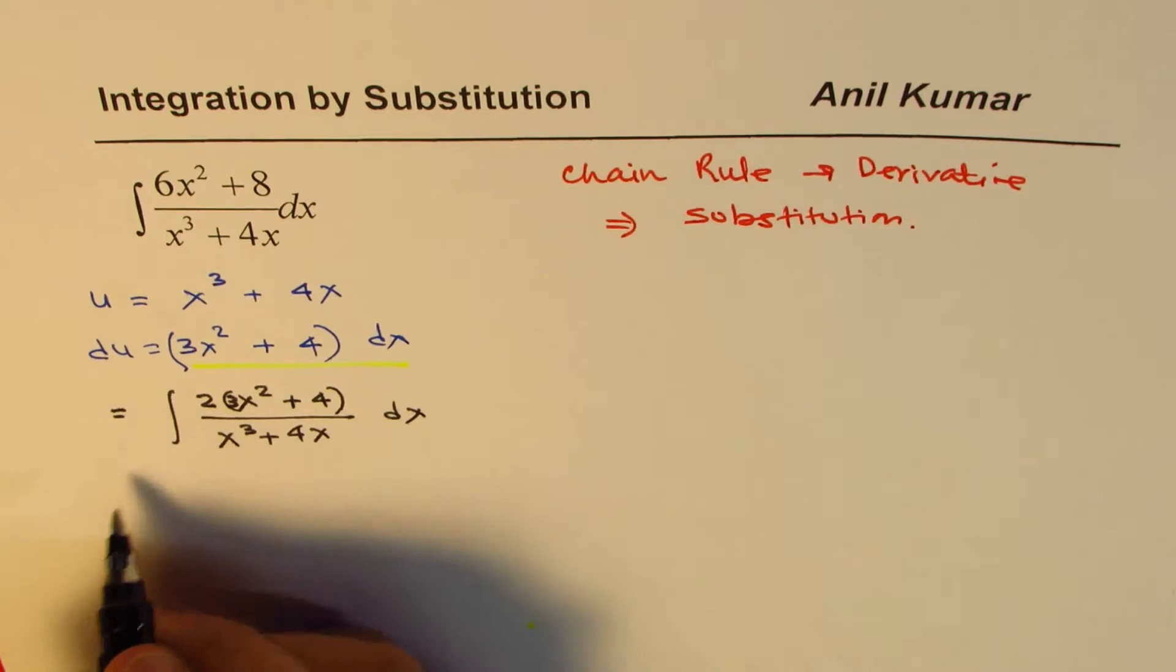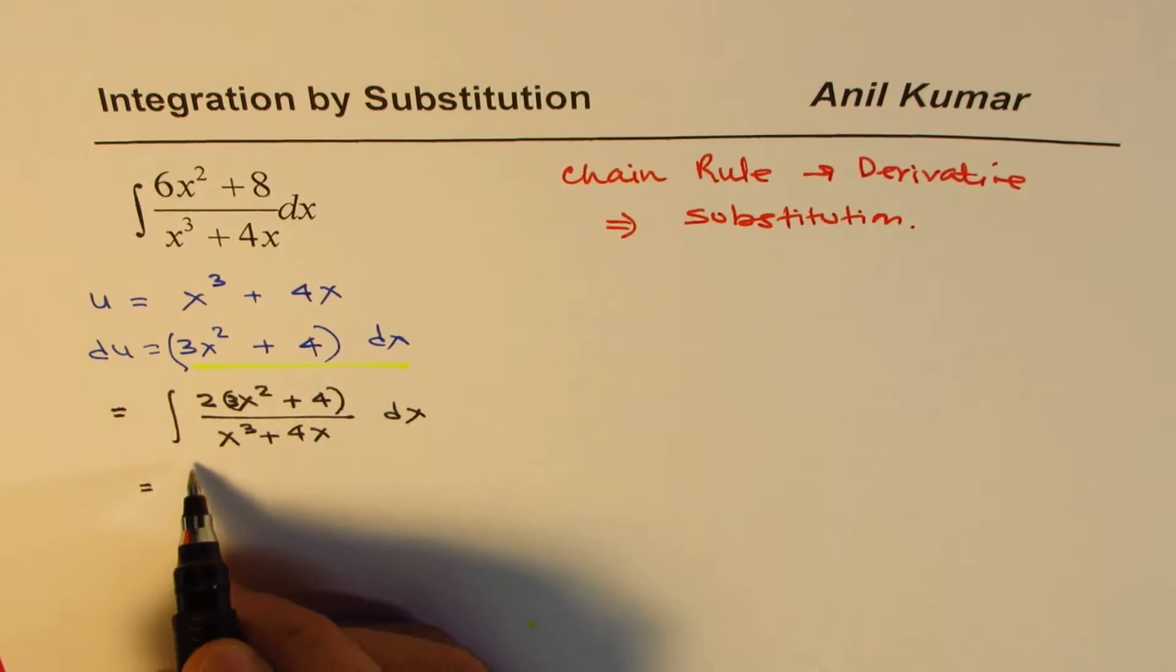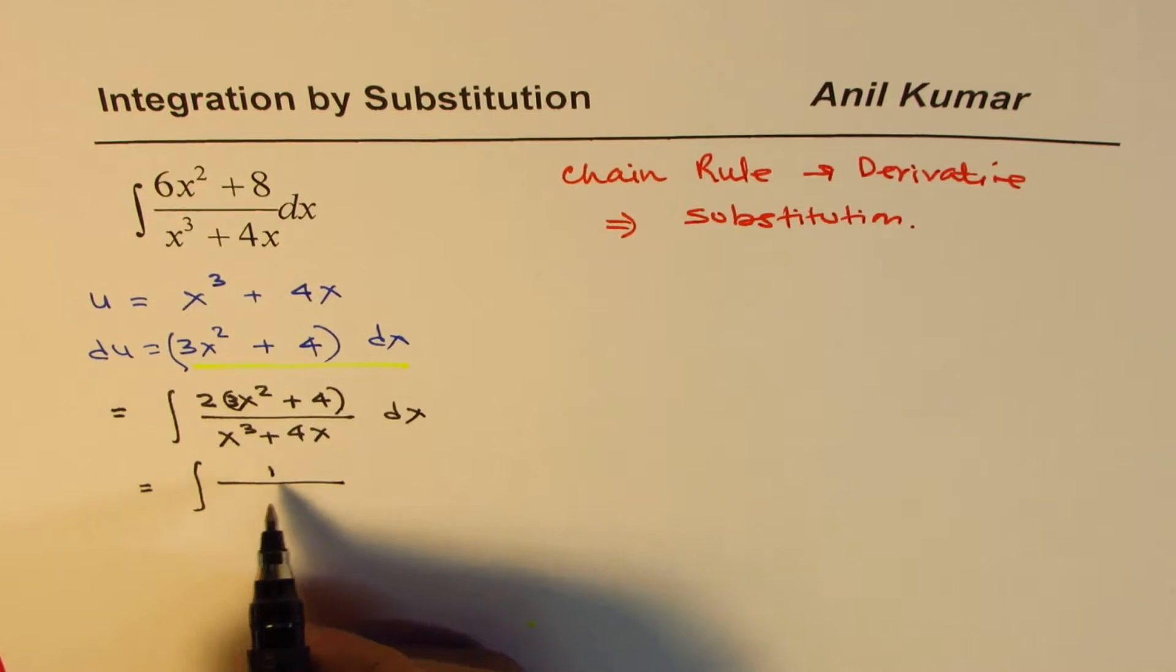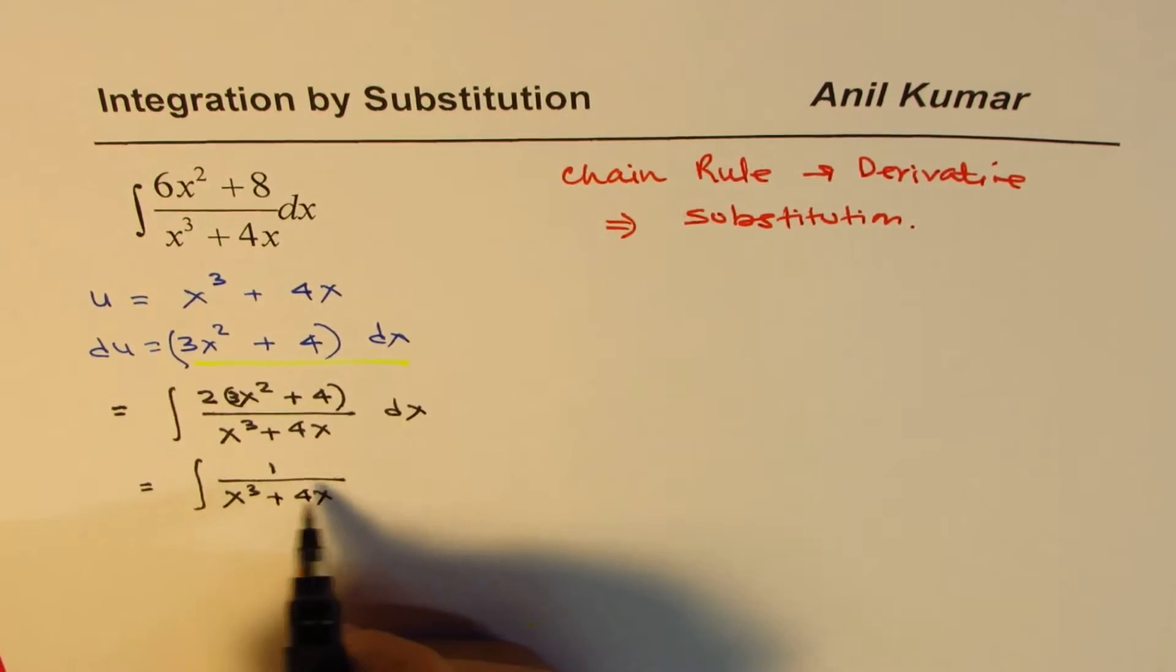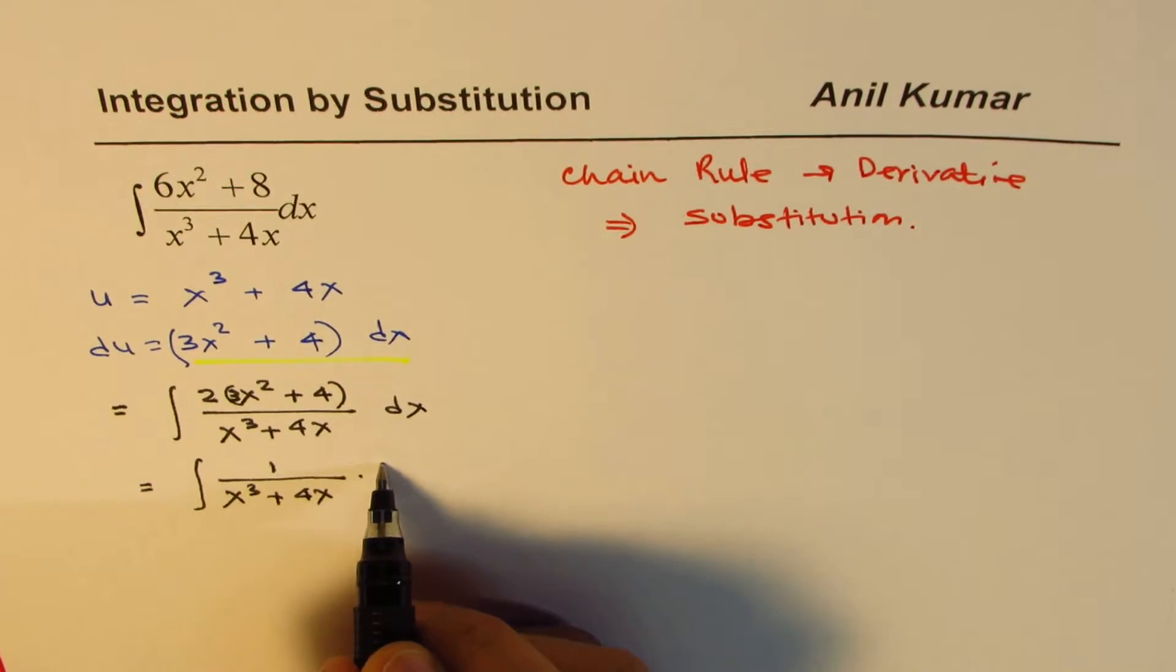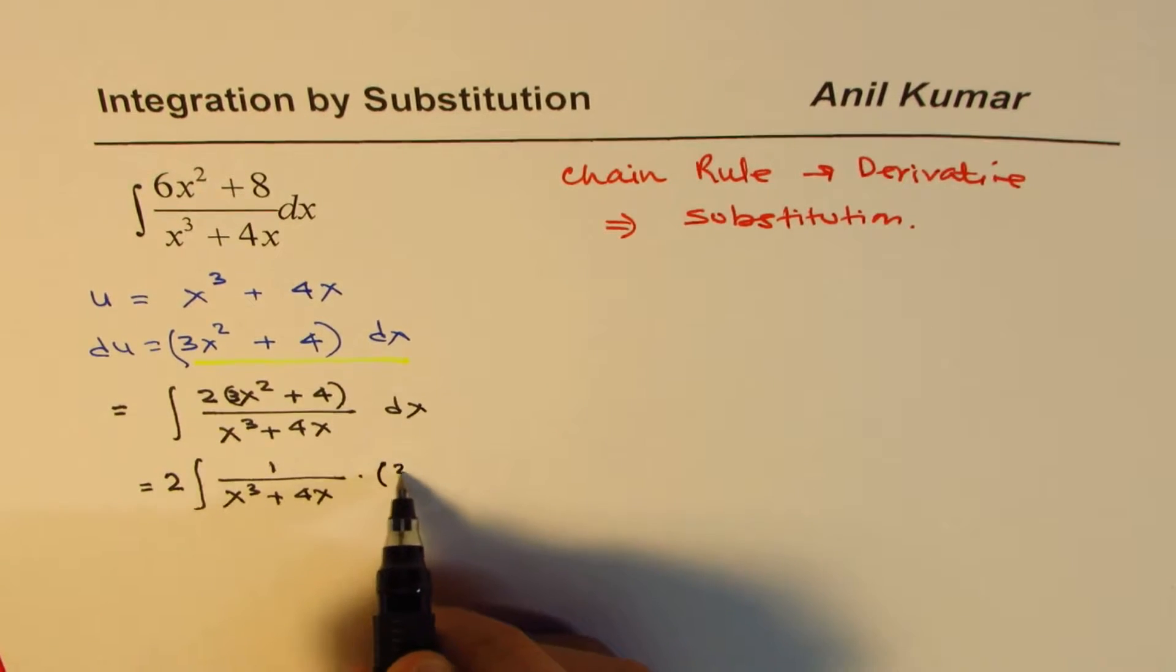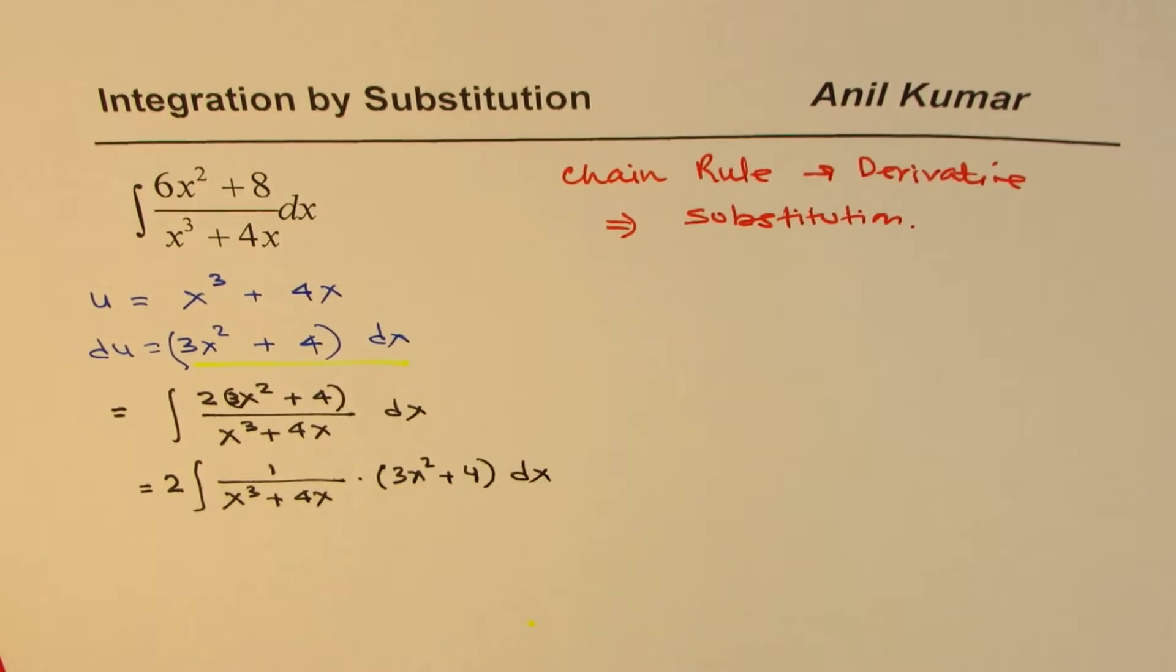So we could write this as equal to... I'm adding this step for clarity. We have 2 times the integral of 3x squared plus 4 over x cubed plus 4x dx. This step is not required for you to write as part of the solution, but I'm taking the 2 outside, and then we have 3x squared plus 4 dx.